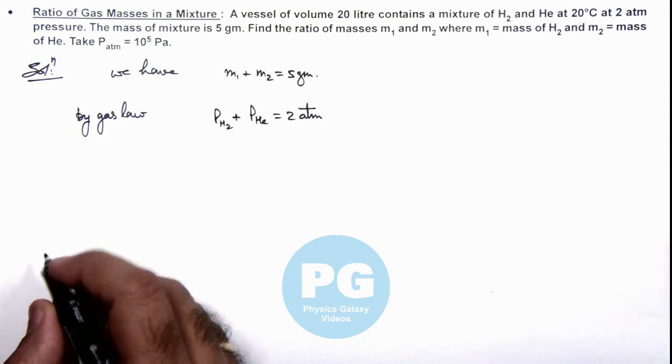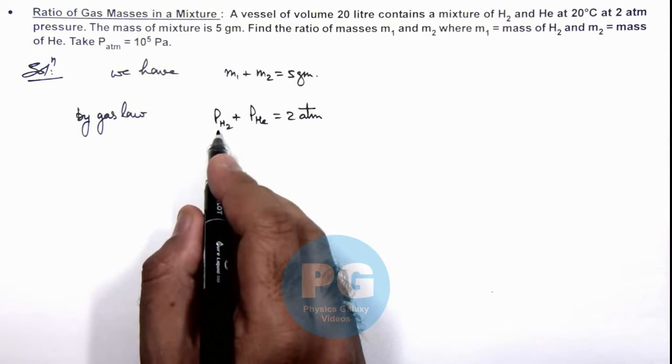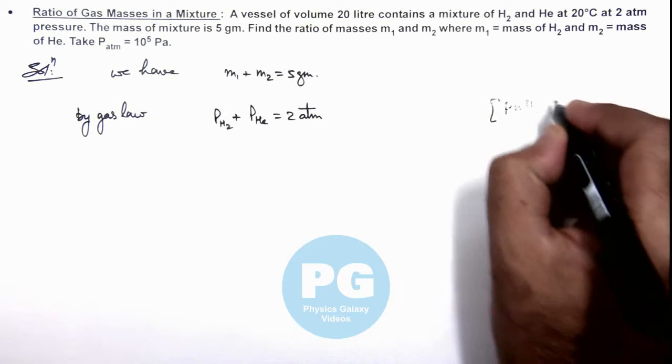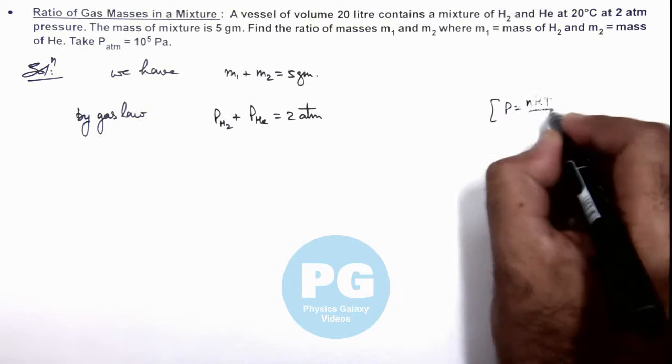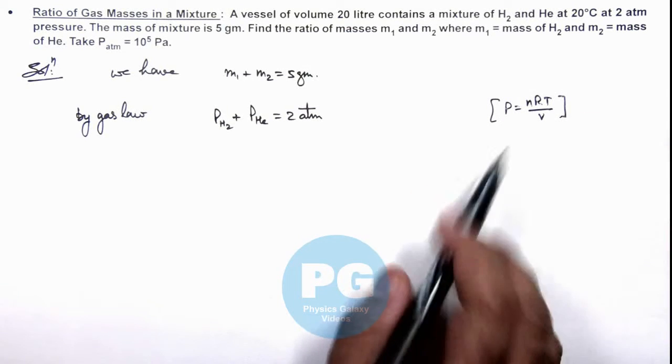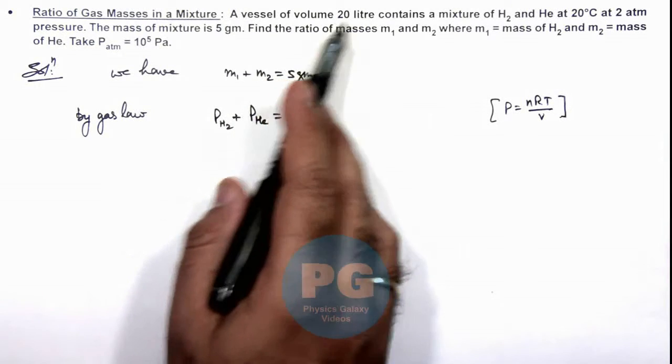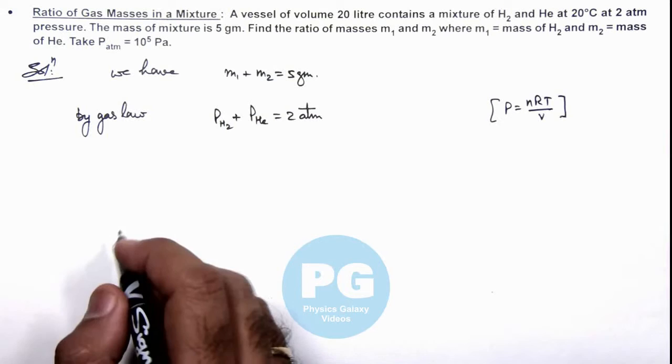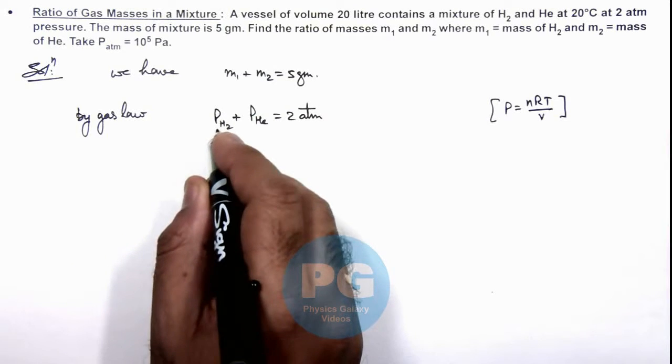And the values of pressure we can write as nRT by V, so if we use pressure is equal to nRT by V. Then in this situation, we are given that the total volume of gas mixture is 20 liters.